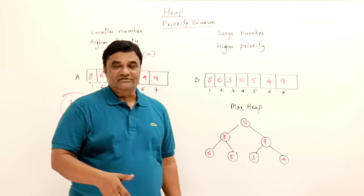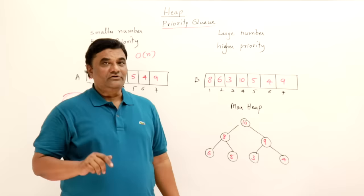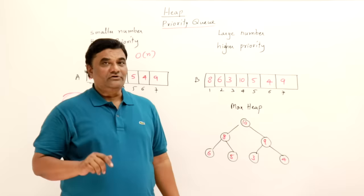So, priority queue can be implemented using either a min heap or a max heap — min heap if you always want the smaller number, max heap if you always want the larger number. That's all in this video. If you want to take the full course, check the description for C++ and data structures courses.